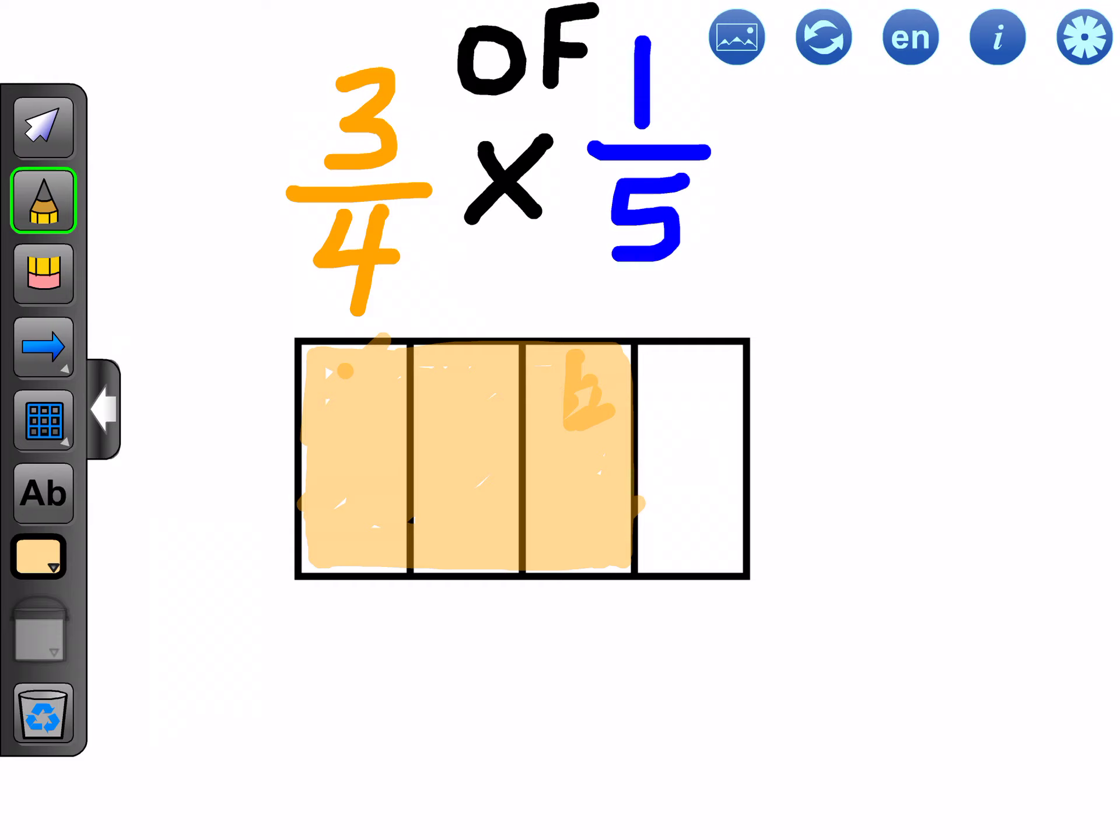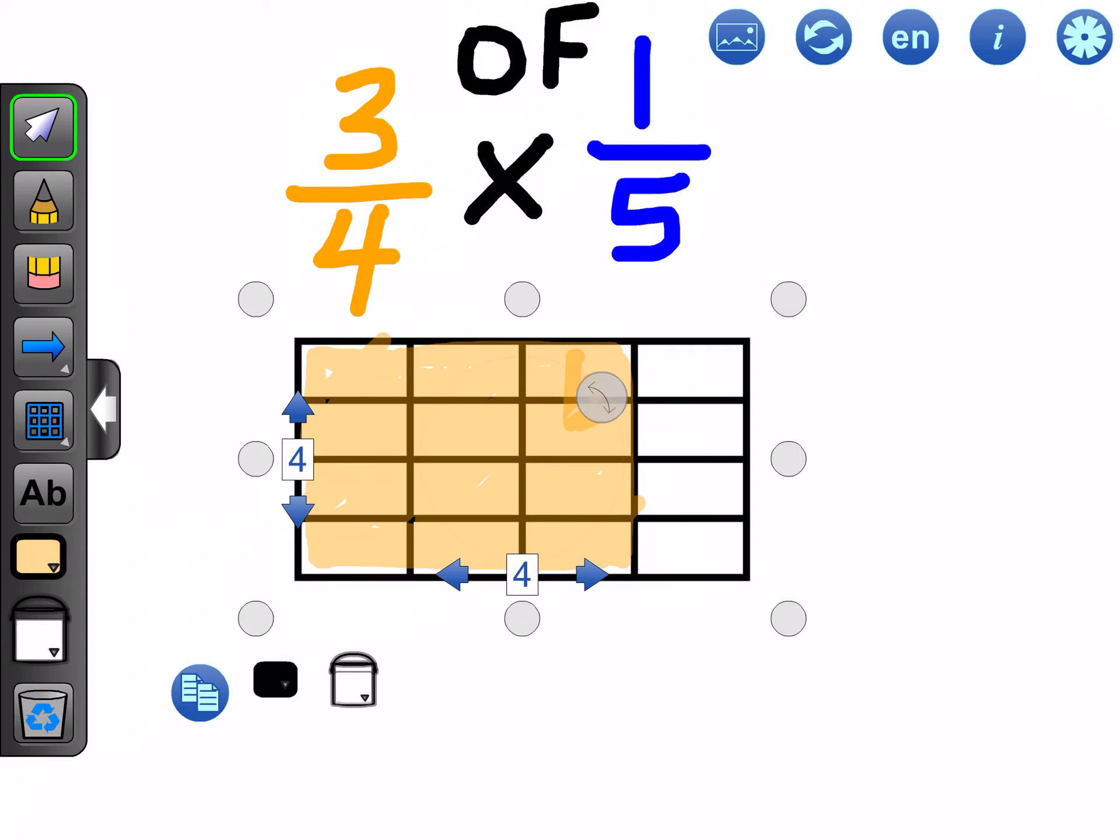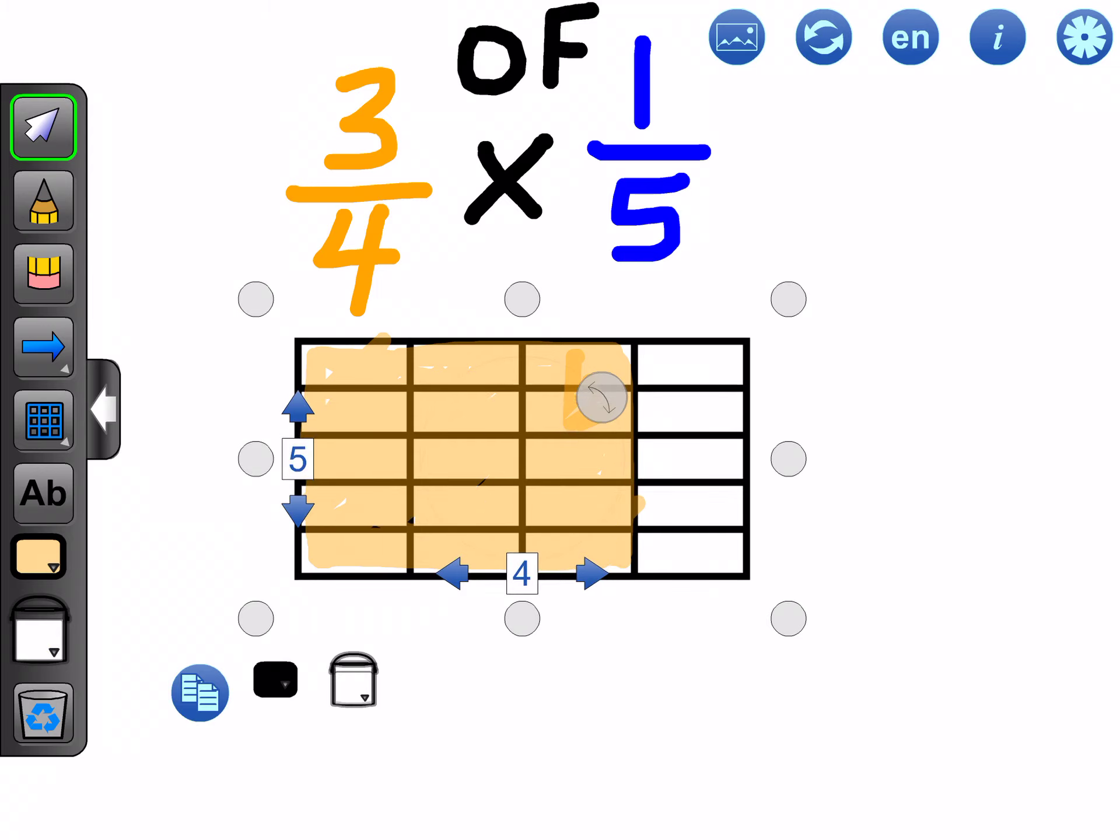Now, this is three quarters of a whole, but that's not what we're looking for. We're looking for three quarters of one fifth. So that means we need to actually take our whole piece here and subdivide it into fifths. So you'll see here that on this side, we have it divided into fifths, and then our columns are divided into quarters.